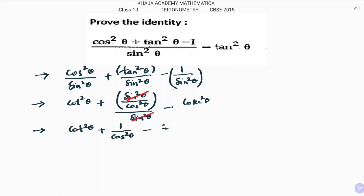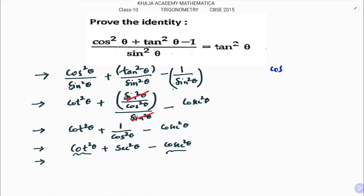So the expression becomes: cot²θ + 1/cos²θ - cosec²θ. Now here we have cot²θ plus cosec²θ terms. Rewrite as cot²θ minus cosec²θ, which has the value of minus 1.